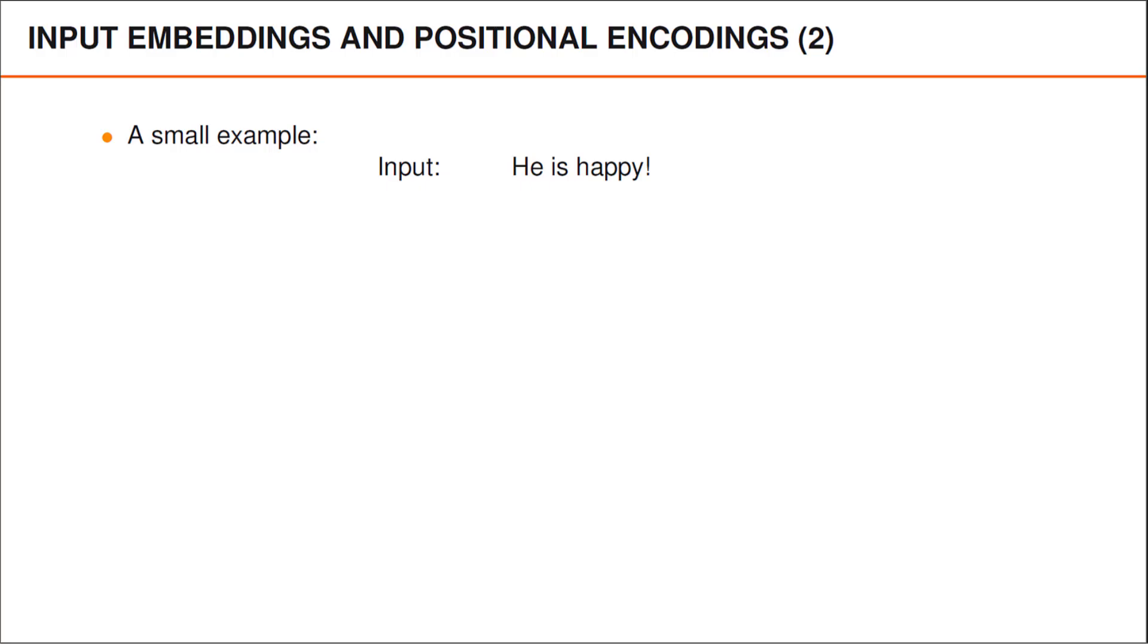There are several ways to encode positions in the vectors. On this slide, I'll describe one possible alternative. The description will be slightly technical, but I think this may be useful for some of you. To make the description concrete, let's assume that the input sequence is He is happy, followed by an exclamation mark.